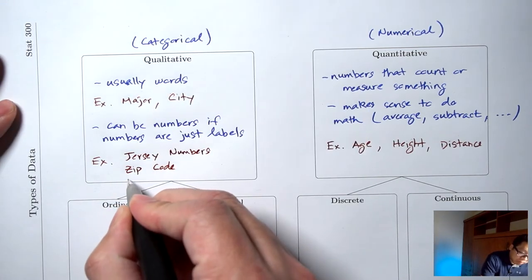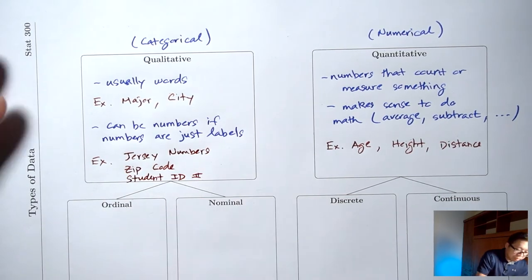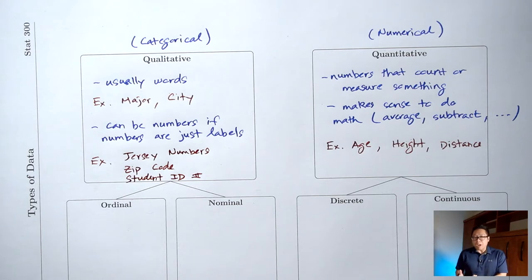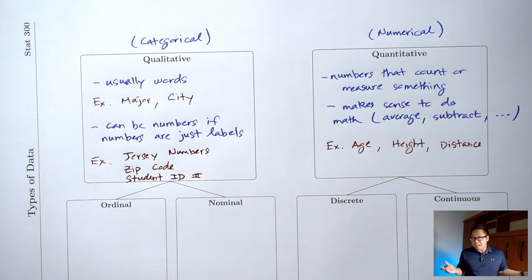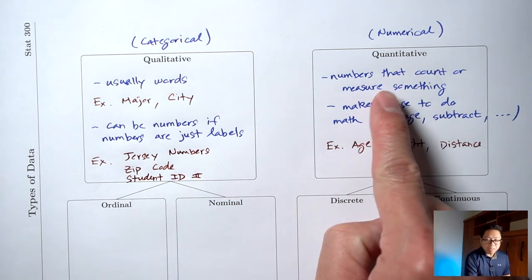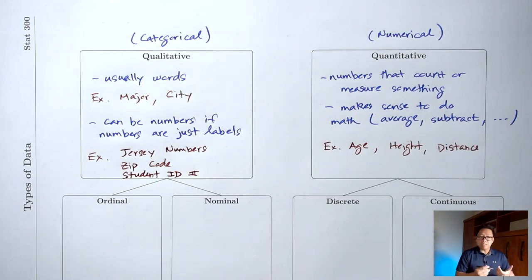Another example: your student ID number — a W followed by a bunch of numbers. Those are numbers, but do they count or measure anything? Would it make sense to take your ID number and your friend's ID number and average them? Or subtract them? Would that mean anything? The answer is no. So all of these are examples of numbers that, because they don't count or measure anything, we consider qualitative — they're just being used as a label.